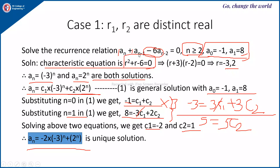Example: solve the recurrence relation An + An-1 - 6·An-2 = 0, for n ≥ 2, with A0 = -1 and A1 = 8. The characteristic equation is R² + R - 6 = 0. The constant of An is 1, the constant of An-1 is 1, and the constant associated with An-2 gives the constant in the characteristic equation. The roots are R = -3 and R = 2.